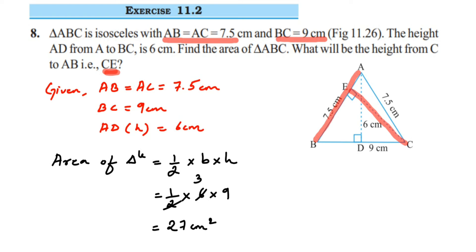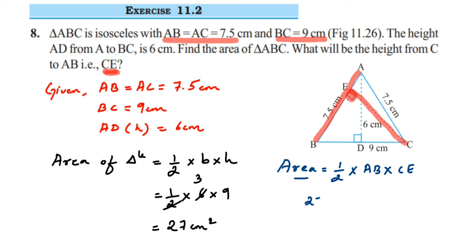Here AB value is 7.5 cm. We're going to use the same formula — area of triangle equals half into base into height — but here the base is AB and the height is CE, since we have to find CE. So: area of triangle = half into AB into CE.